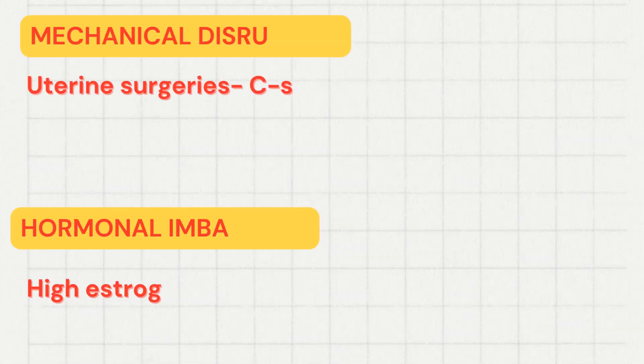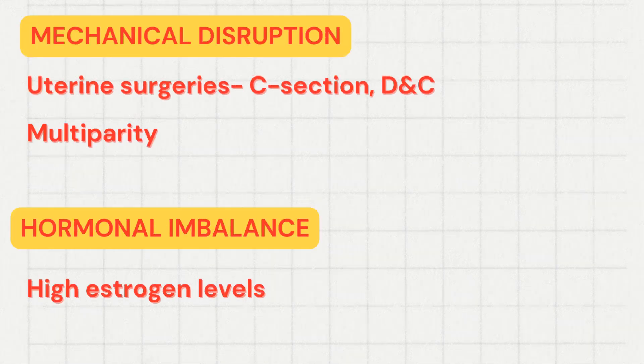This invagination is facilitated by mechanical disruption of the interface between the endometrium and the myometrium, and also due to hormonal changes. Mechanical disruption may occur due to uterine surgeries like cesarean section, dilatation and curettage, fibroid removal, etc. Multiparity is another important cause of disruption of the endometrial-myometrial interface.